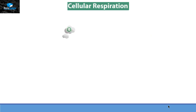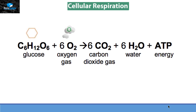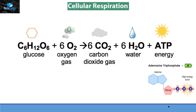Now inside our cell it is going to degrade a compound called glucose into carbon dioxide and water with lots and lots of energy, and this energy will be in the form of ATP molecule, or adenosine triphosphate molecule.